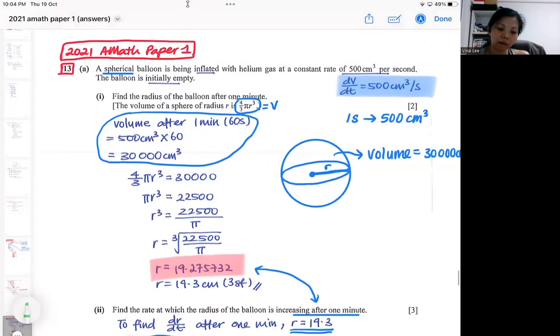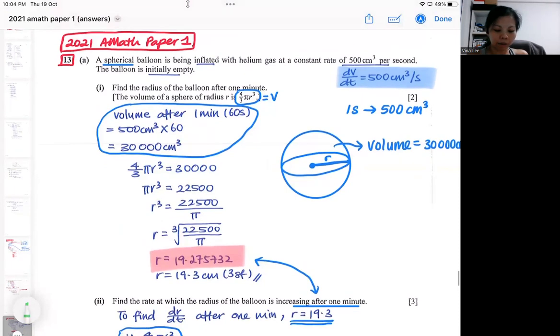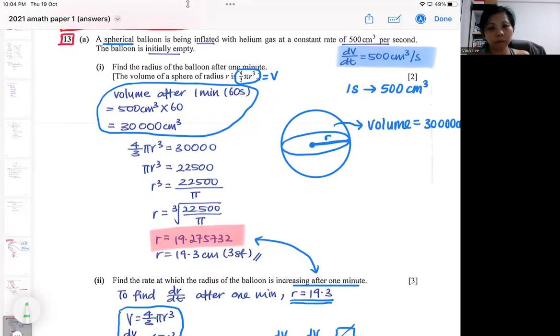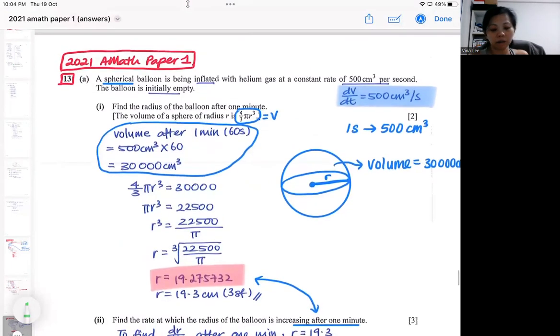This one, I will say it's not very difficult if you can get past the first part. If you can't get past the first part, you realize that this radius cannot be used in the second part. You don't have a radius to use, so you are stuck for the whole question. You can't continue. So it's very important to have a generic idea. What do we mean by 500 centimeter cube per second? It's actually very primary school thinking.